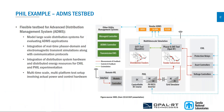A second, more system-level example is an ADMS testbed — an advanced distribution management system testbed, also developed by NREL. It connects a model of large-scale distribution systems for testing different ADMS algorithms, while also connecting control devices for controller hardware-in-the-loop and power devices like inverters for power hardware-in-the-loop, creating a multi-scale, multi-platform test setup involving actual power and control hardware.